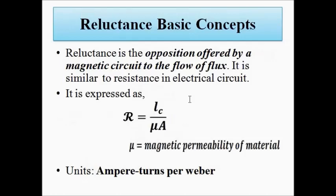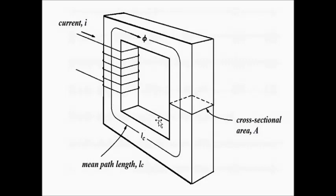What is reluctance? The reluctance plays the same role in a magnetic circuit that resistance does in an electrical circuit. Reluctance is the opposition offered by the magnetic circuit to any flow of magnetic flux through the coil. Reluctance opposes the flow of flux through a magnetic circuit, just as resistance opposes the flow of current in an electrical circuit. Mathematically, reluctance equals L_C — the mean path length — divided by mu times A.